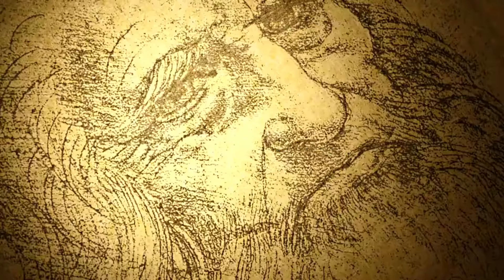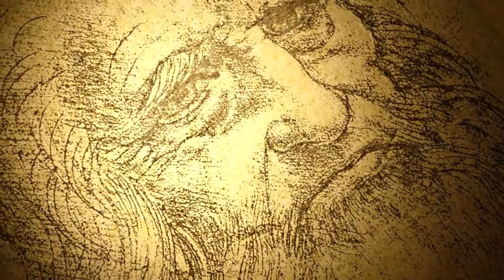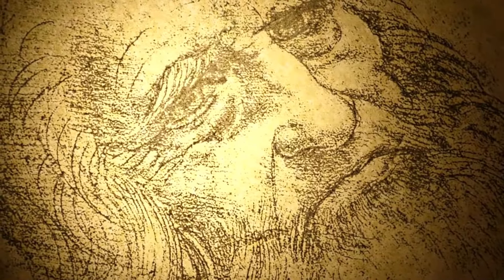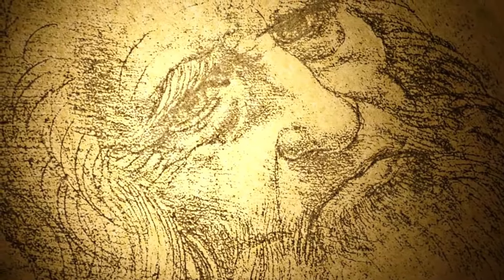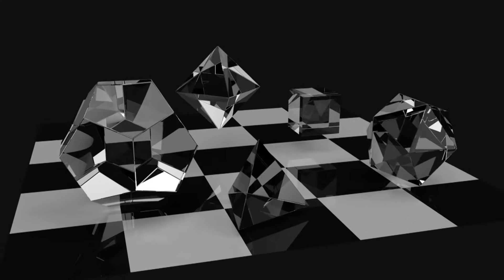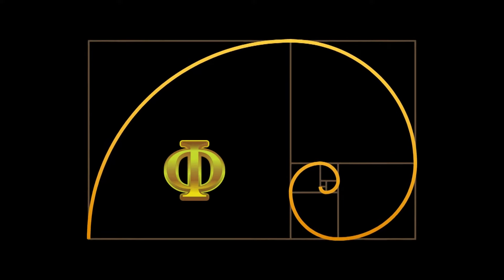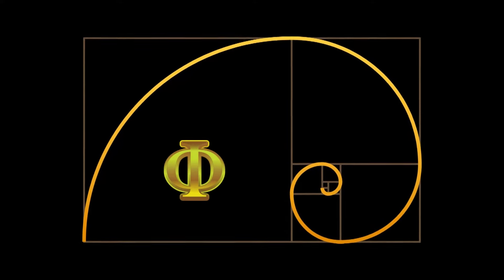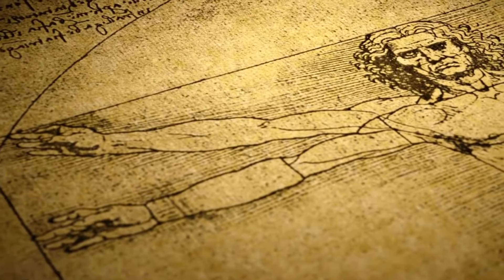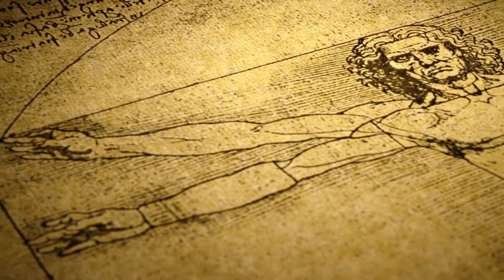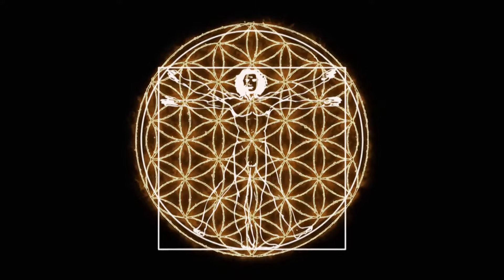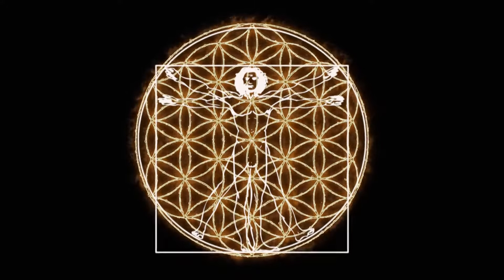History records that Leonardo da Vinci studied it closely and was able to identify the five platonic solids and the golden ratio of phi within it. In fact, da Vinci's famous Vitruvian Man is thought to be based to some extent on the Flower of Life symbol.